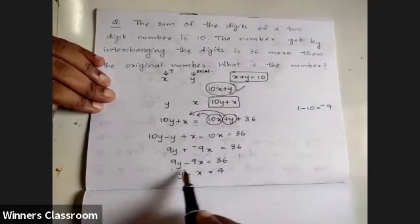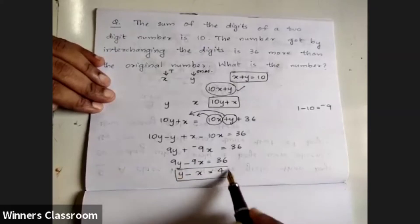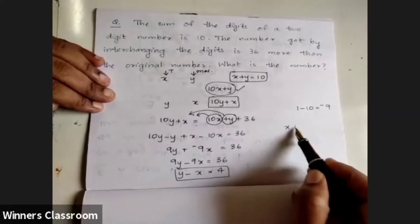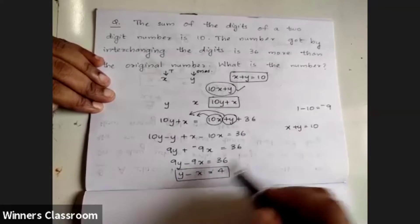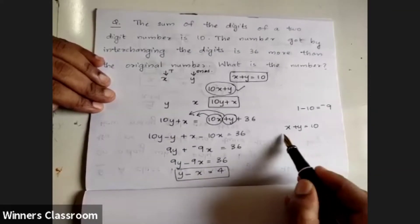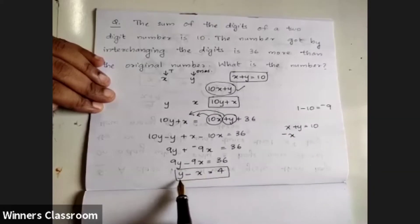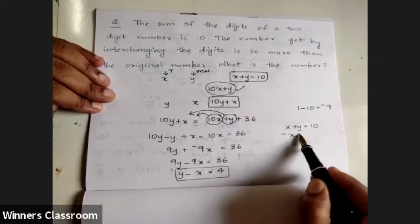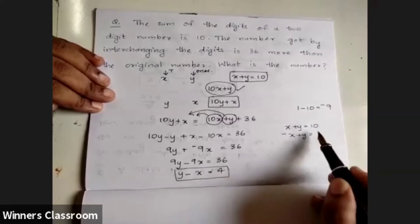Now we have two equations: x plus y equals 10, and this is minus x plus y equals 4.